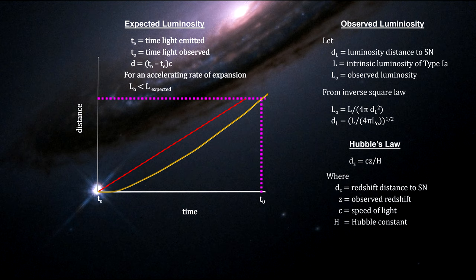This would result in a longer light travel time, larger distance traveled, and a dimmer observed supernova compared to a non-accelerating universe.